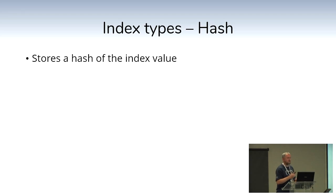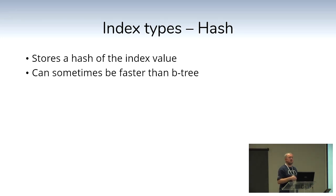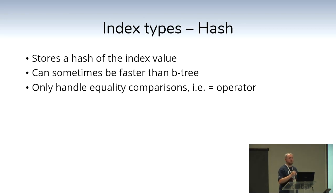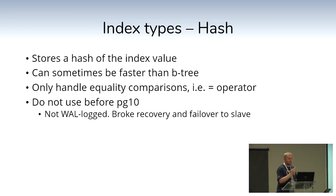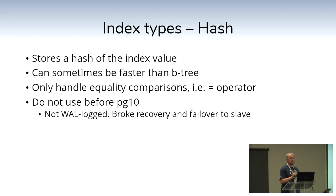The hash index — be careful with anything before Postgres 10. Instead of storing the value itself, it stores a hash of the value. It can sometimes be faster than a B-tree, especially on slightly larger data sets, because it's optimized to store a hash instead of different data types. But because of that, it can only handle the equality operator — you cannot use less than, greater than, or anything else. Do not use it before Postgres 10; from Postgres 10 and 11 onwards, feel free to use it, but compare B-tree and hash — you often won't get a major performance boost over B-tree.